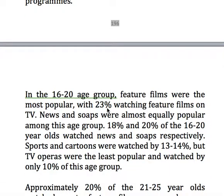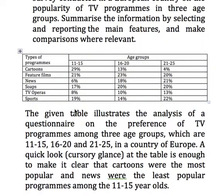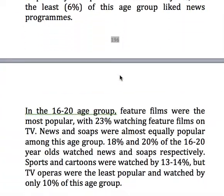In the 16 to 20 age group, feature films were the most popular with 23% watching feature films on TV. News and soaps were almost equally popular among this age group — 18% and 20% of the 16 to 20 year olds watched news and soaps respectively. Sports and cartoons were watched by 13 to 14%, but TV operas were the least popular, watched by only 10% of this age group.